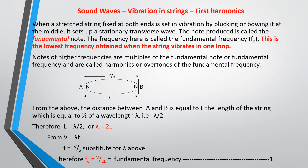When a string is fixed at both ends and set into vibration by plucking the center, it will produce a stationary wave. The first frequency produced is called the fundamental frequency, and it is the lowest frequency that can be obtained from a string that vibrates in one loop. Multiples of this fundamental frequency are called overtones or harmonics. For the first harmonic, the length of the string equals half a wavelength, so wavelength equals 2L.